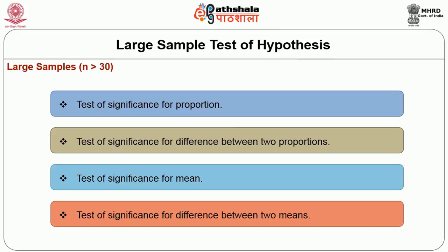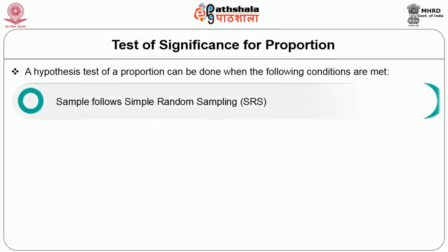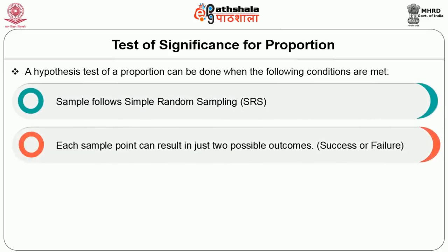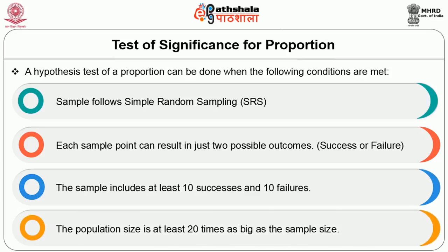Let us now move on to the test of significance for proportion. A hypothesis test of a proportion can be done when the following conditions are met: the sample follows simple random sampling; each sample point can result in just two possible outcomes — success or failure; the sample includes at least 10 successes and 10 failures; and the population size must be at least 20 times as big as the sample size.